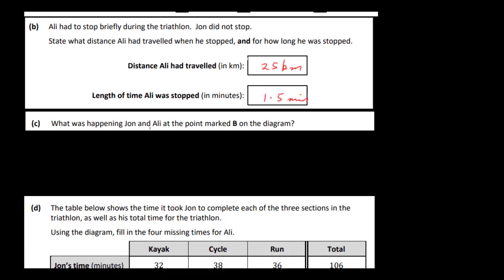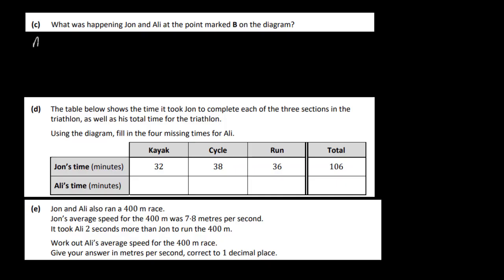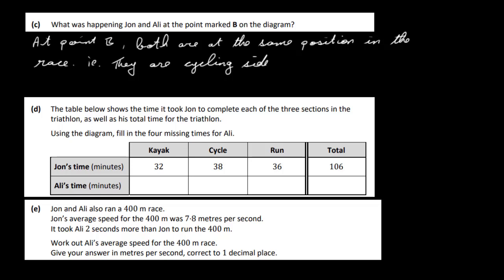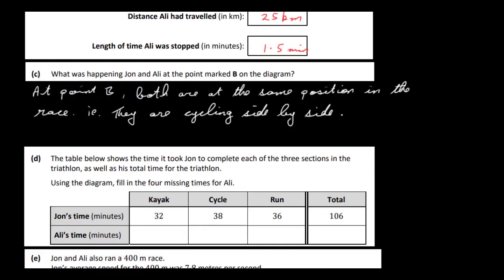So let's look at the next question then. What was happening, John and Ali at the point B marked on the diagram? So at the point B here, they were both kind of side by side in the cycle, they were cycling together at this particular point. So I'm saying here that at point B, both are at the same position in the race, they are cycling side by side at this particular point, but it looks like Ali is speeding up and is actually going to overtake John at this particular point. But at that particular point, at B, they're actually side by side.